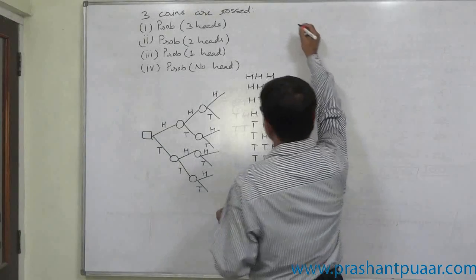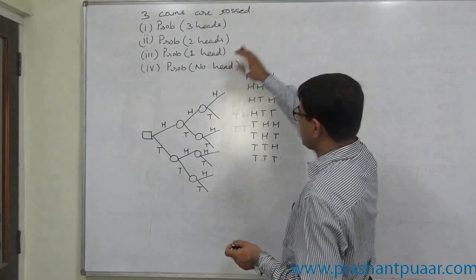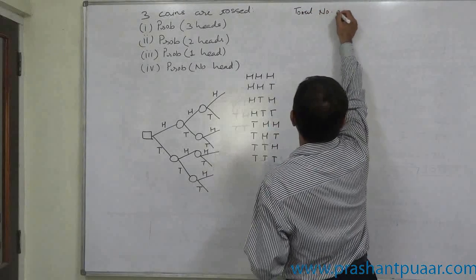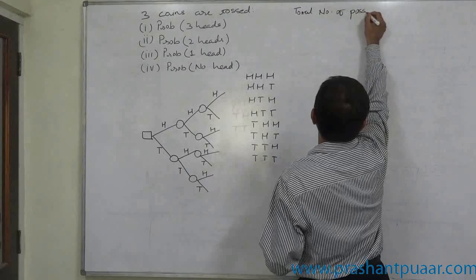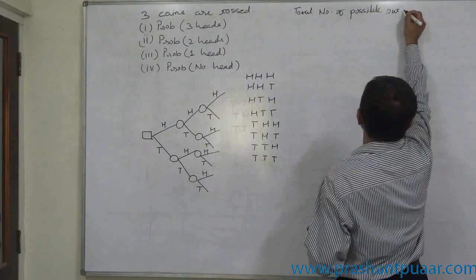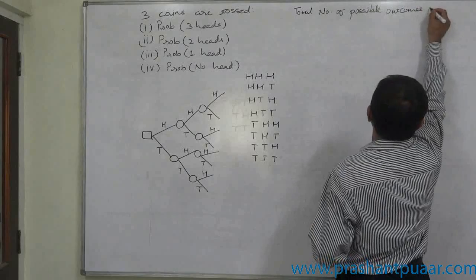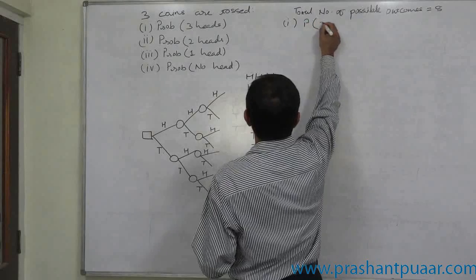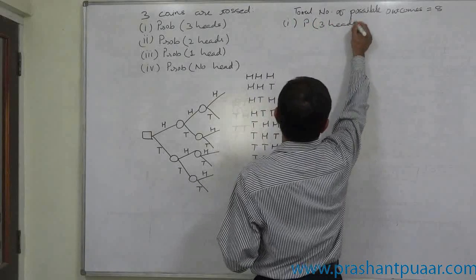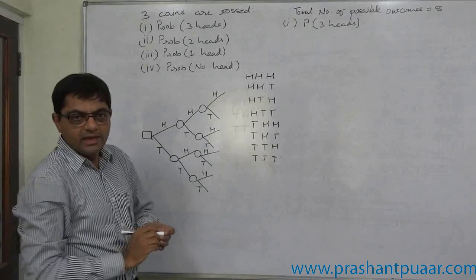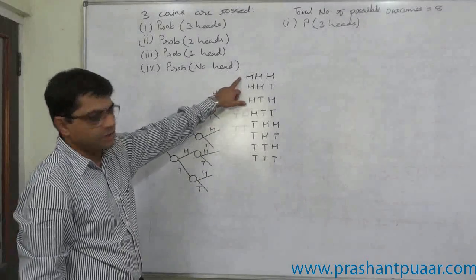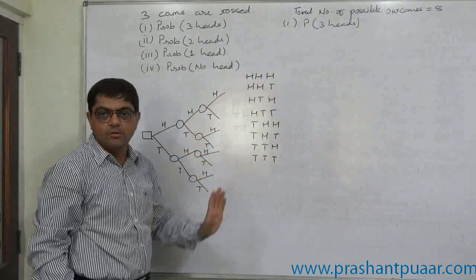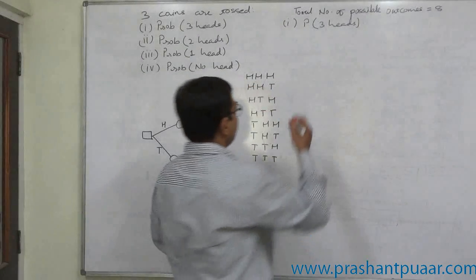Now we want to calculate various probabilities. First of all, the total number of possible outcomes — possible cases or possible results — is eight. The first case is the probability of three heads. How many outcomes are favorable to this particular event? Only one: head on the first, head on the second, head on the third.